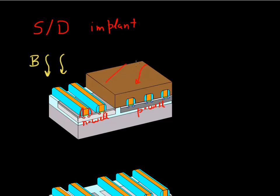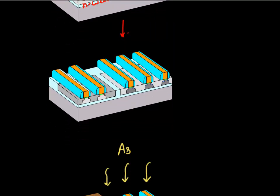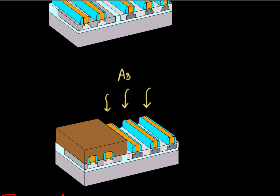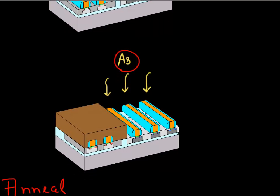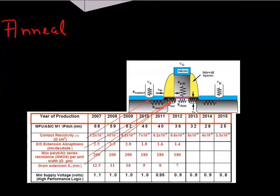You cover one type of transistor with photoresist — covering the P-well — and implant the N-well with boron. Then you strip the photoresist, cover with photoresist again to expose the other transistors, and implant with arsenic. Now you have implanted your source drain regions, finished all the implants, and the next step is to anneal the implants with a high temperature step that will activate these dopants.